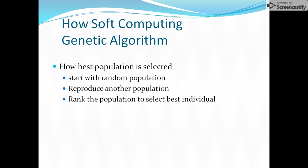All four components will be discussed in later videos. In genetic algorithms, we select the best population among different groups. We start with a random population, reproduce another population, rank every individual, and then select the best of them. This is how genetic algorithms select the best population among different populations.